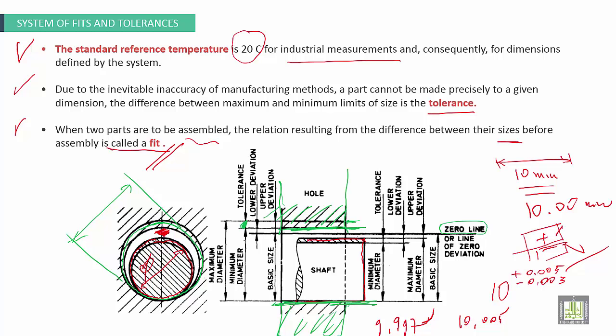What is the nominal size? Nominal size. Here in this example, tolerance to shaft. Here we have lower deviation, upper deviation for the shaft, zero line.